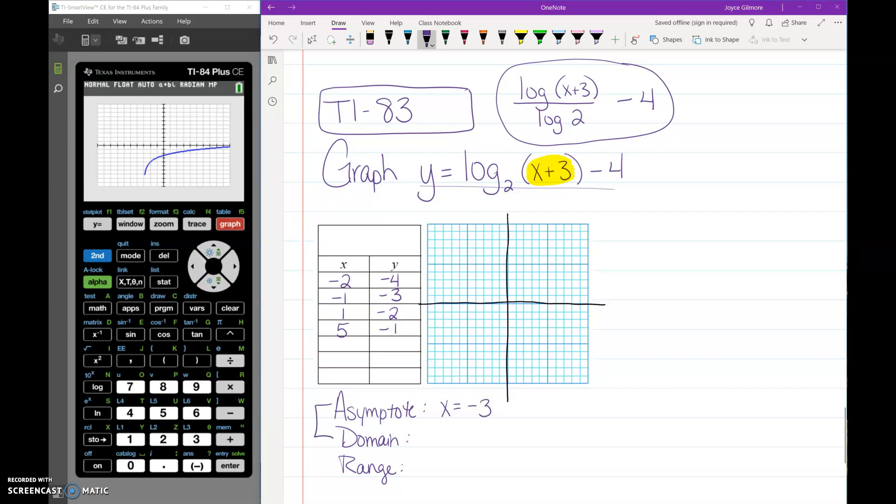The domain is tied to the asymptote. Notice the graph is on the right side of that asymptote. So our domain is x is greater than negative 3. And the range is always all real numbers.